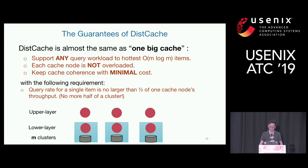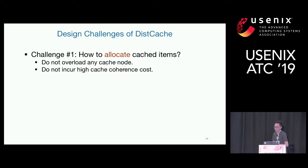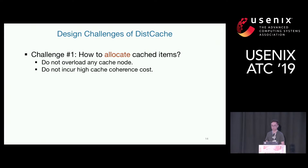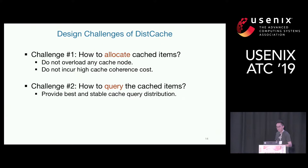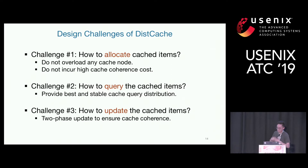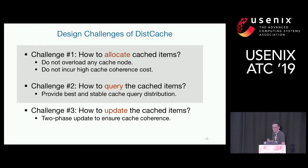With these guarantees in mind, DistCache has the following design challenges. The first is how to allocate cache items — once we identify hot items, how to cache them without overloading any cache node and without incurring high cache coherence cost. The second challenge is how to query the cached items — with two layers of cache nodes, how do we provide the best stable query distribution? The third challenge is how to update cached items. For updates, we use a classical two-phase update mechanism: invalidate the item first, then update. In this talk, I'll focus on challenges one and two.